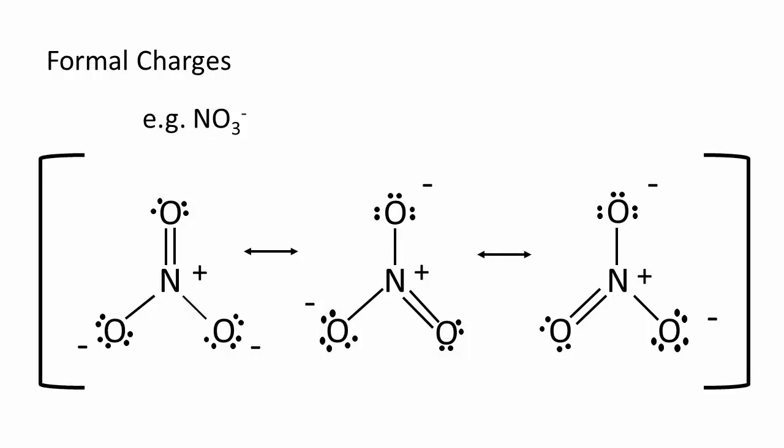and in reality, we have a superposition of all three Lewis structures. Because of this, all three nitrogen-oxygen bonds will be identical and intermediate between a single and double bond.